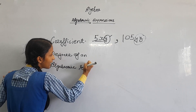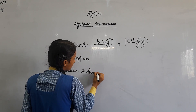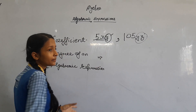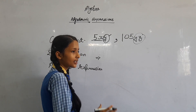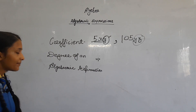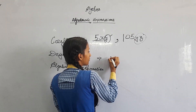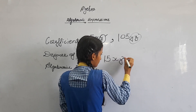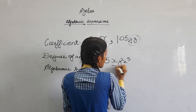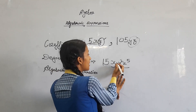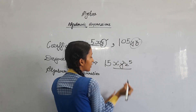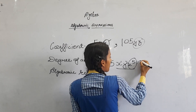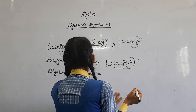And our next topic is degree of an algebraic expression. The term having variable at the highest degree is known as the degree of an algebraic expression. Here we see there is a variable x to the power — if here is nothing, so here is 1 — then x, y, z. The highest power is z to the power 5, so it is the highest degree of the algebraic expression.